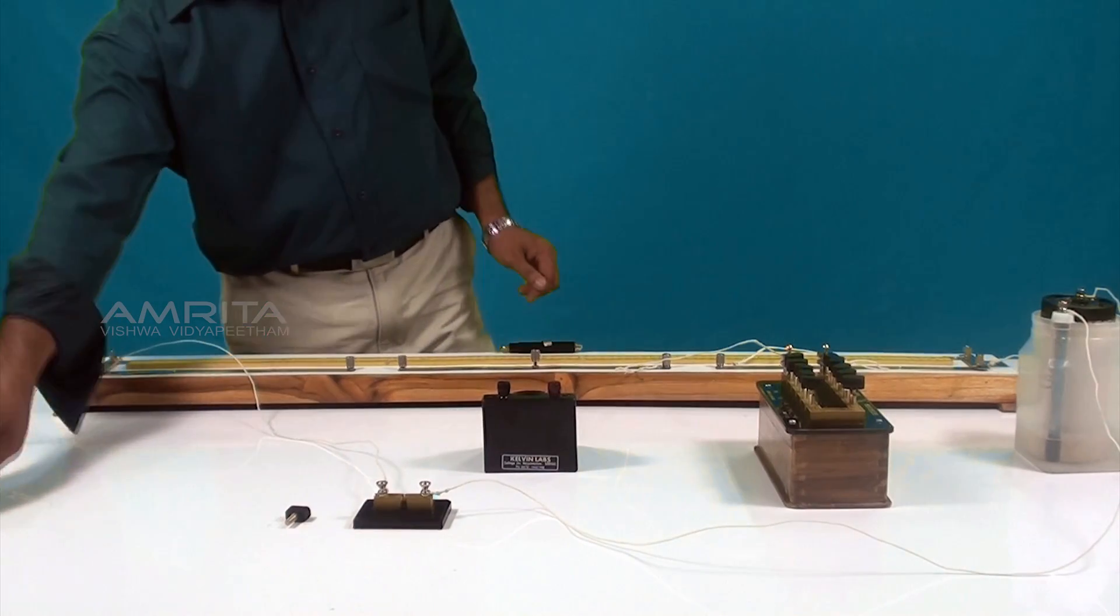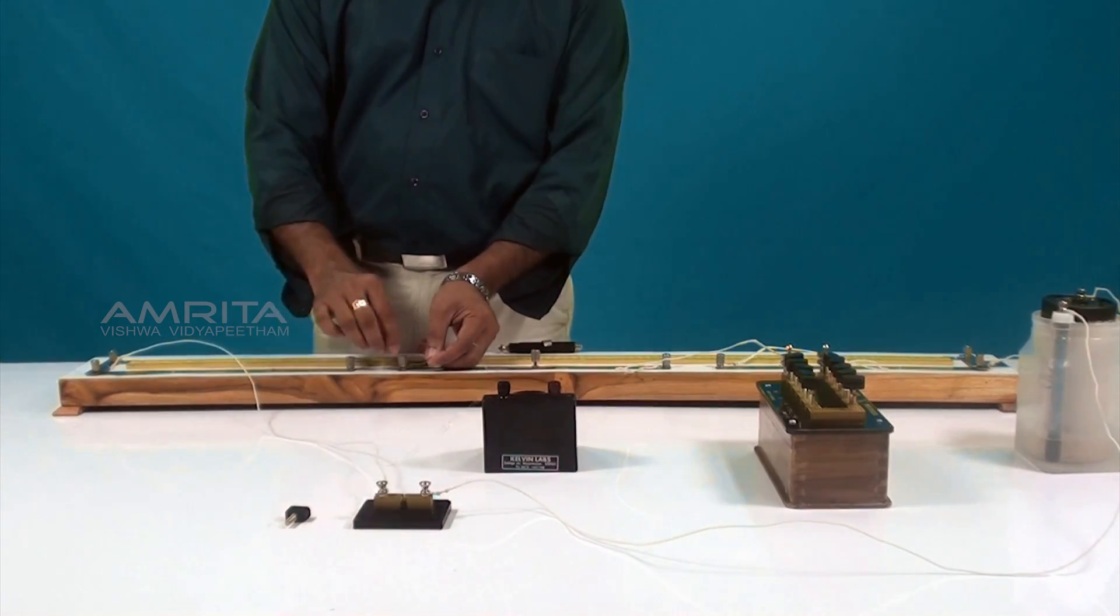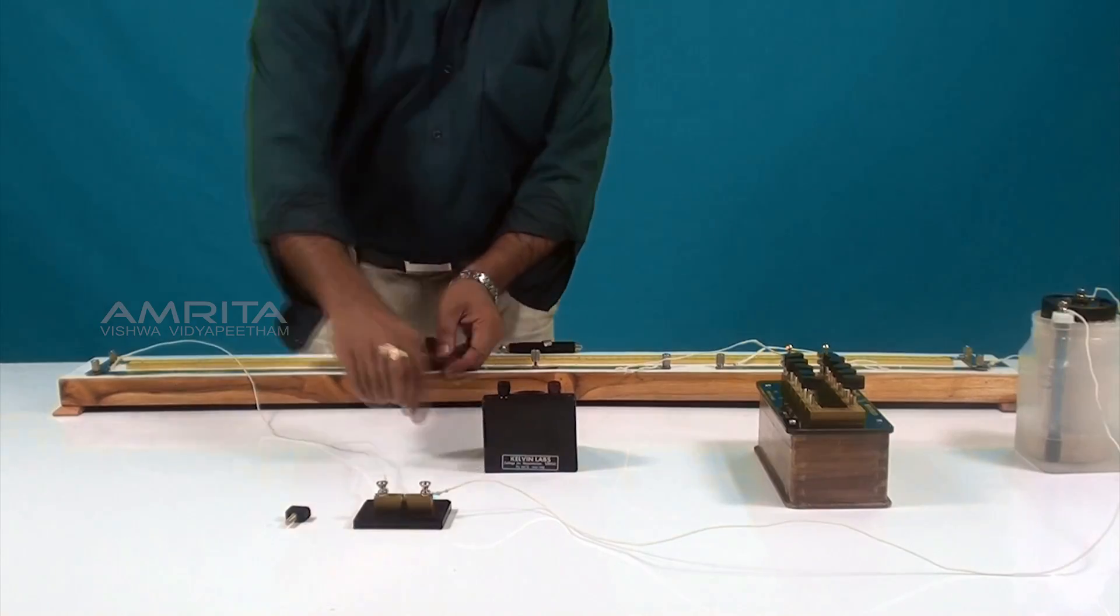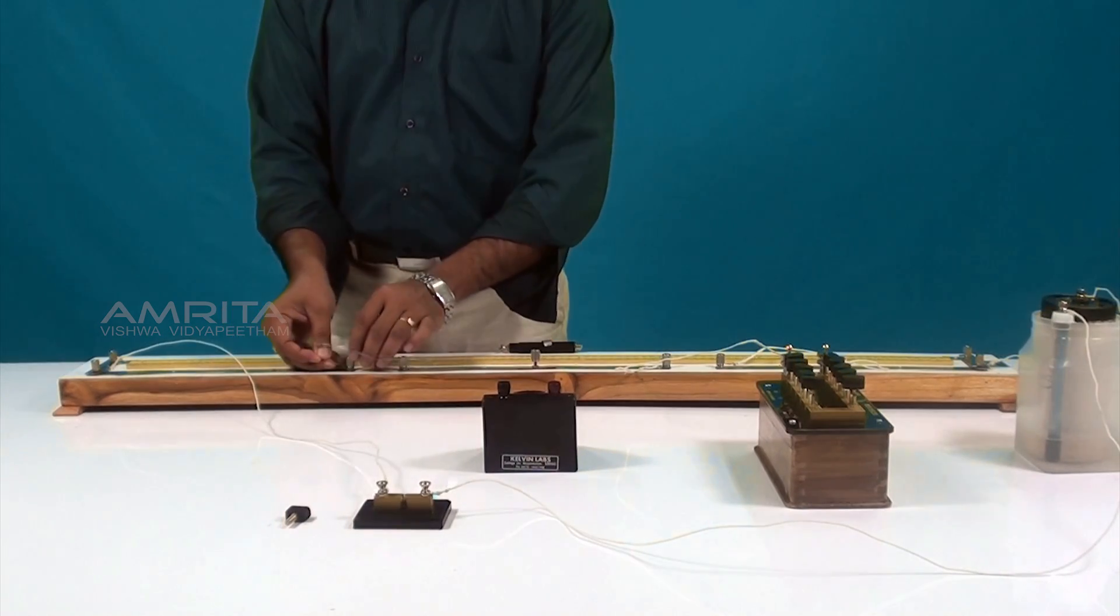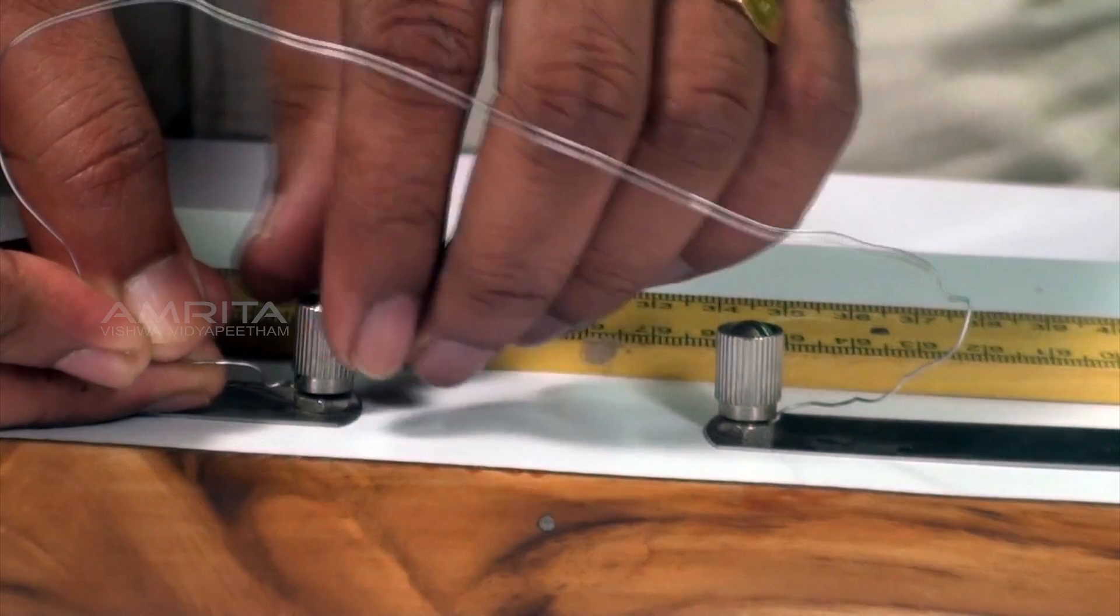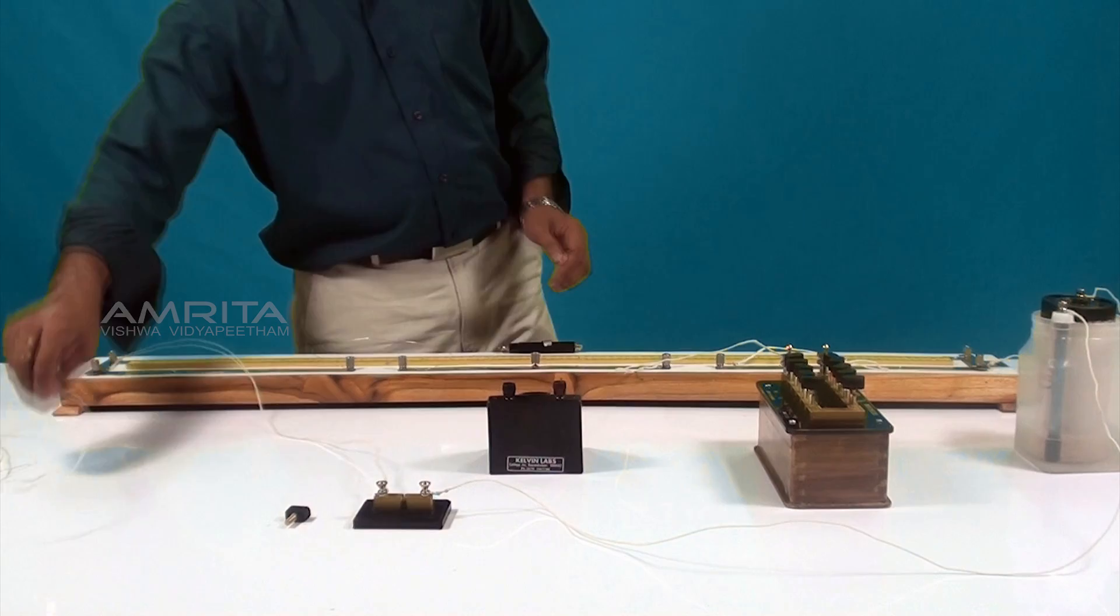Then, take a resistance wire R1 and connect it to the gap G2 of the meter bridge. Since the resistance of the wire depends on its length, make sure that both ends of the resistance wire just touch the gap.